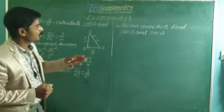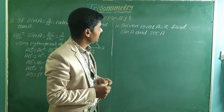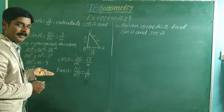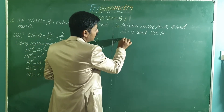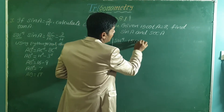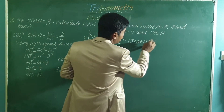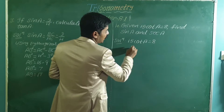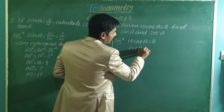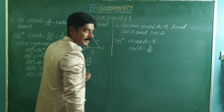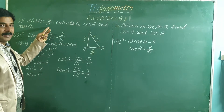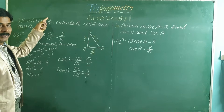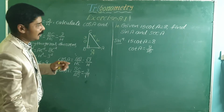Fourth problem: given 15 cot A equals 8, find sin A and sec A. Here, instead of giving cot A directly, they have written it as 15 cot A equals 8. So cot A equals 8 over 15. This is the same as the previous problem style — for example, 4 sin A equal to 3 means sin A equals 3 over 4.